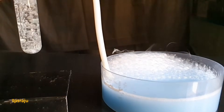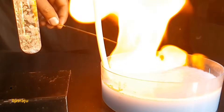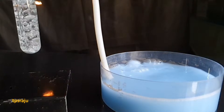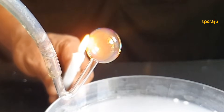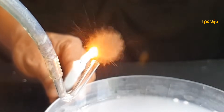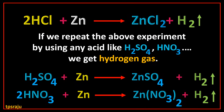Let us observe once again the test for hydrogen. Let us test the hydrogen gas in a single bubble. If we repeat the above experiment using any acids like sulfuric acid, nitric acid, etc., we get hydrogen gas. From the above activity, we can conclude that when acid reacts with metal, hydrogen gas is evolved.